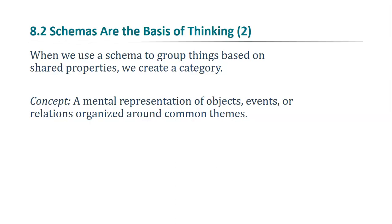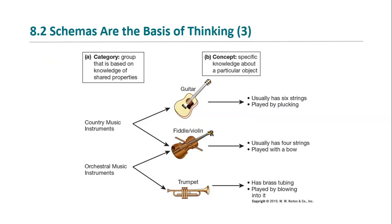Schemas are useful because they allow us to think efficiently about objects by categorizing them. For example, within the schema of music, we might have two categories: country music instruments and orchestral music instruments. This allows us to take each instrument and put it within a specific category within the schema. The specific knowledge about a particular instance or object within a category is called a concept. For example, a guitar usually has six strings.